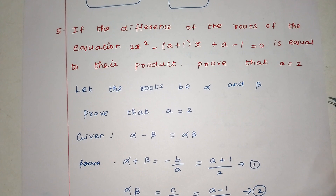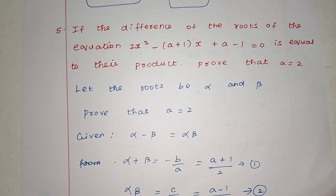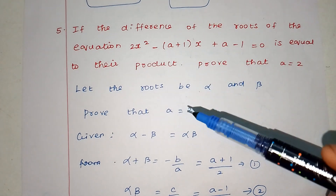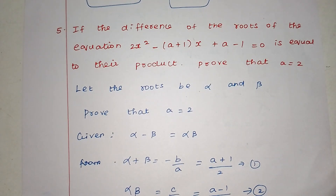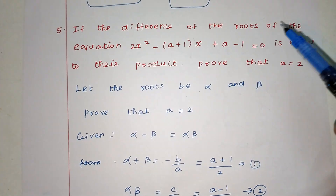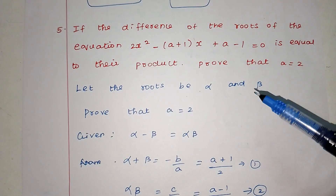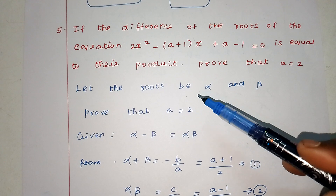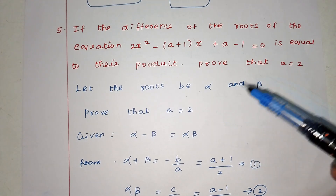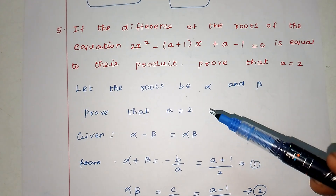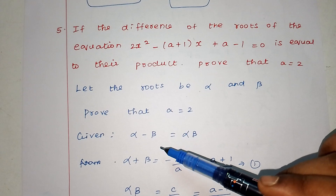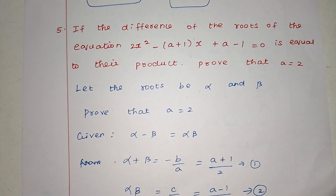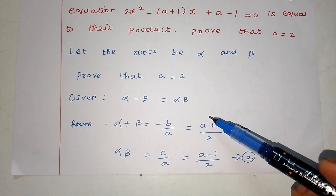The condition we solve — what do we do? A equal to 2, prove. First, let the roots be alpha and beta. If the difference of the roots is subtraction, the difference of roots alpha minus beta is equal to the product, which is alpha into beta.